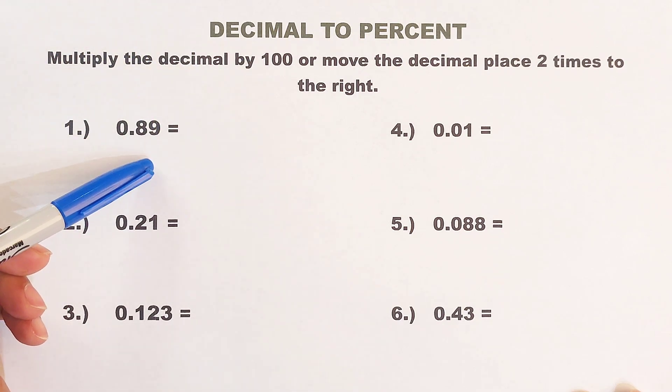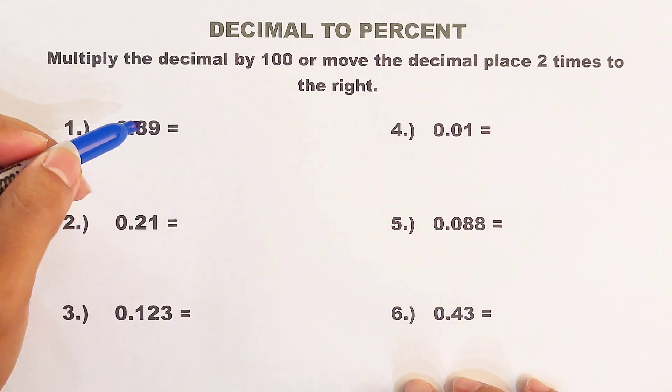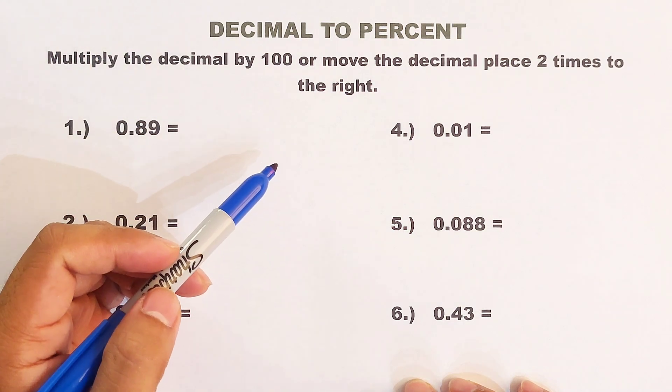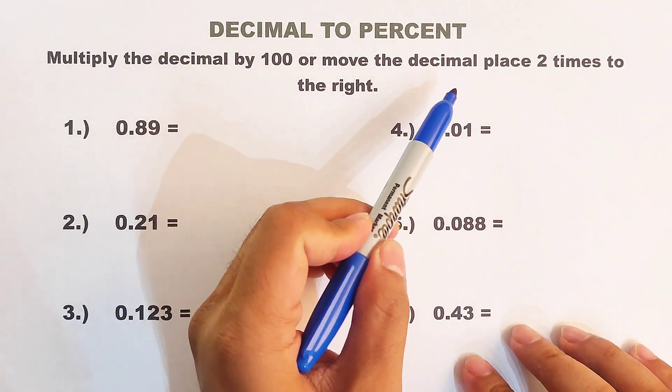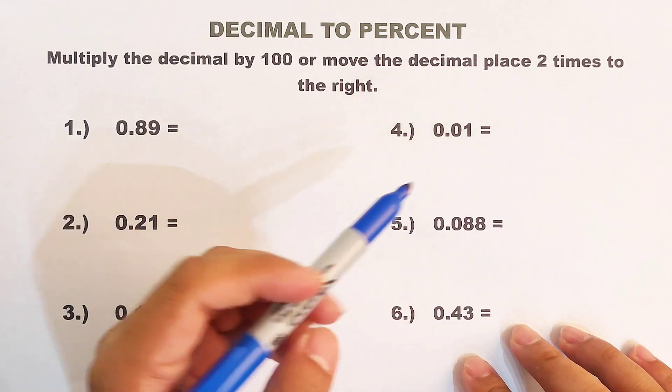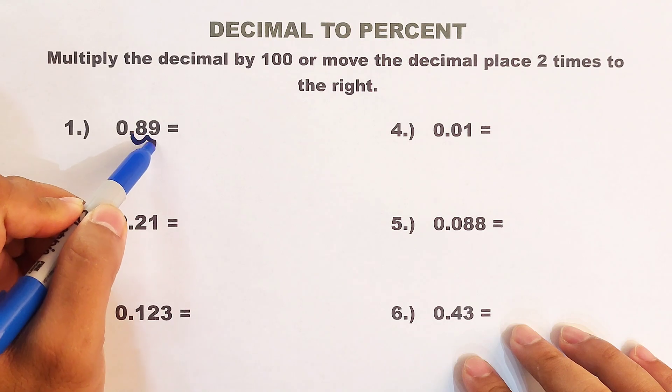We are given here 0.89. As you can see, 0.89, this is our decimal point. And it says here, we need to multiply it by 100 or we will move the decimal place two times to the right. So from here, we will move 1 and 2.